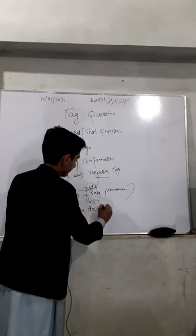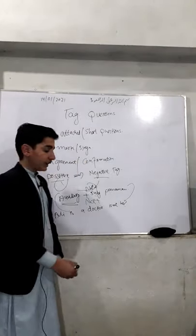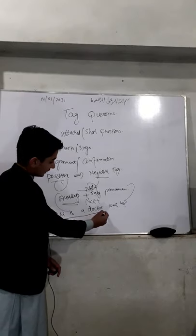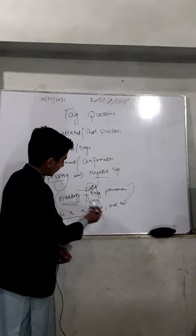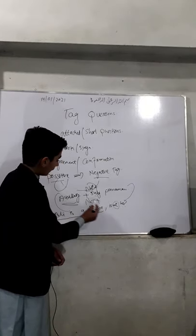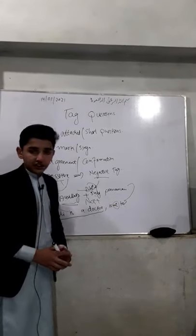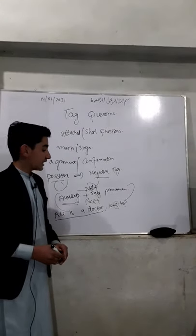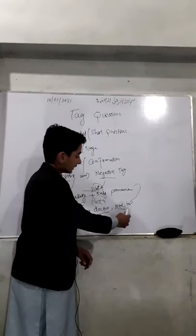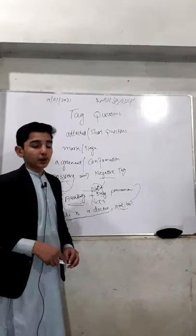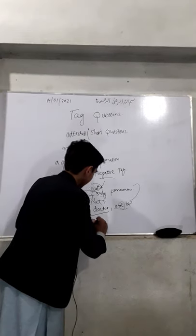For example: 'Ali is a doctor, isn't he?' Here we have a positive sentence — 'Ali is a doctor.' We use a negative tag: 'isn't he?' Here 'is' is the auxiliary, 'not' is added, and 'he' is the subject pronoun. The tag question is asking whether it is true or not.